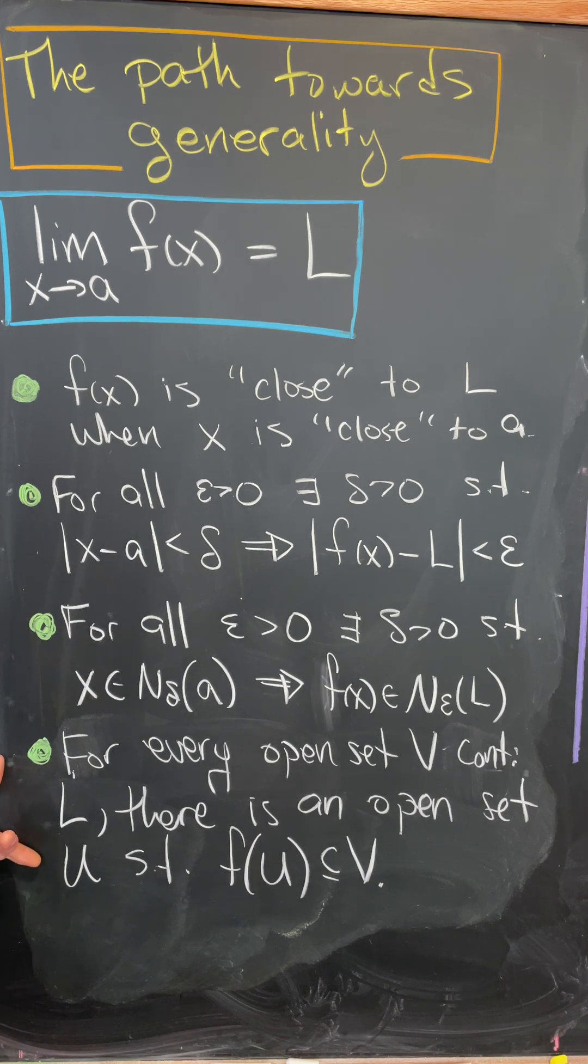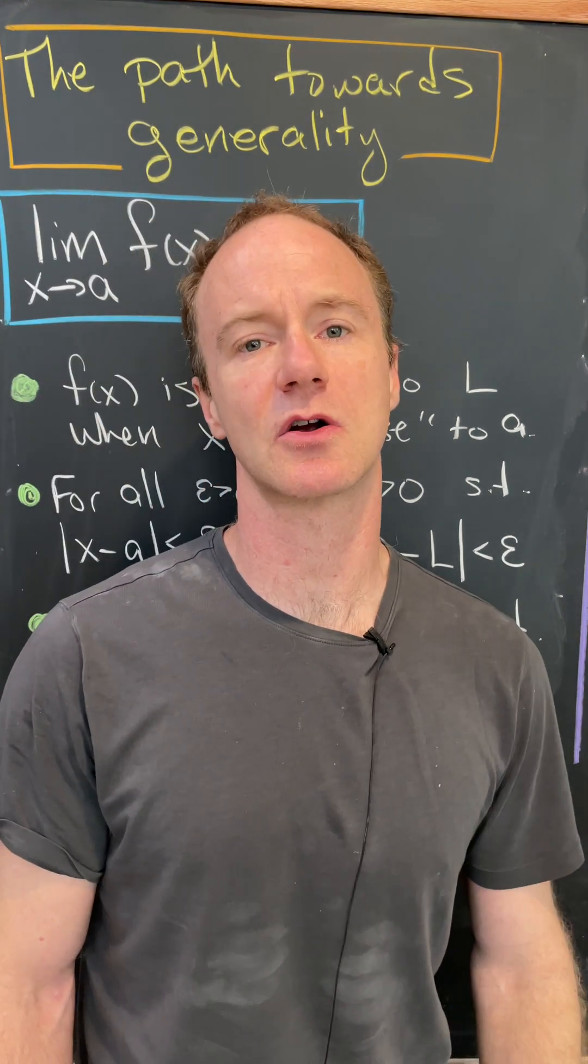And then you would tweak the deltas and the epsilons out of that. For every open set V containing L, there is an open set U, such that f(U), the image of U, is contained in V. So this happens all across mathematics.